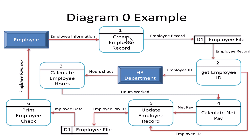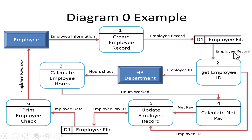For example, 'employee information' enters a process and becomes 'employee record' after processing. However, for a data store, the data going in can be the same as the data going out, because the data store does not process data — it just stores it.